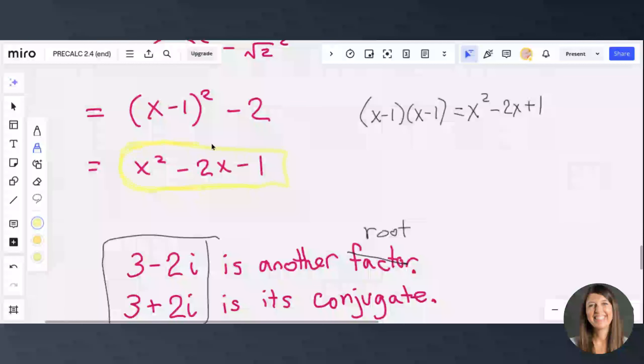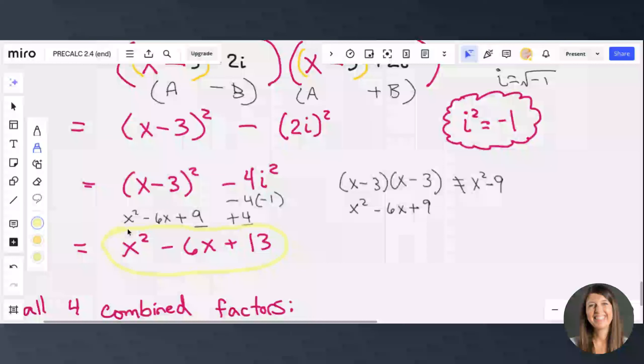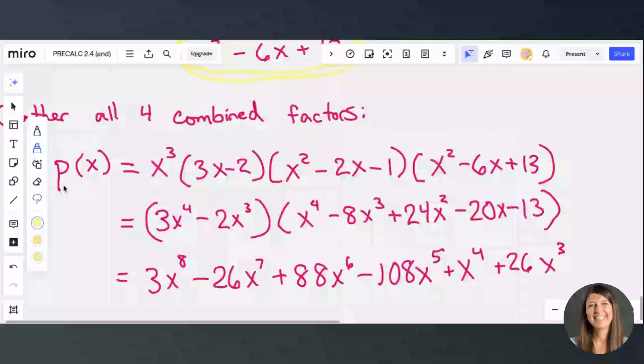And then the fourth one is this one that we just did with our imaginary roots. So if we combine all four of them, p of x is x cubed times 3x minus 2 times x squared minus 2x minus 1 times x squared minus 6x plus 13.